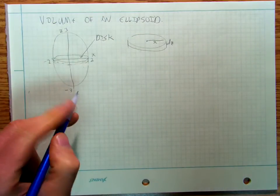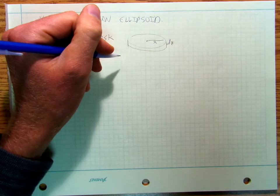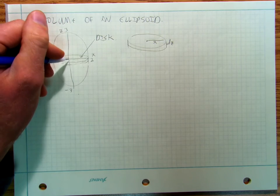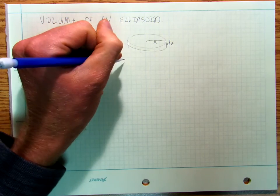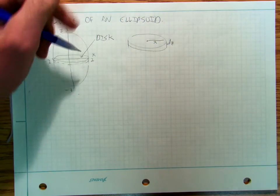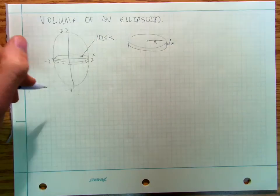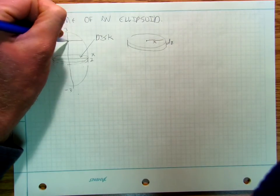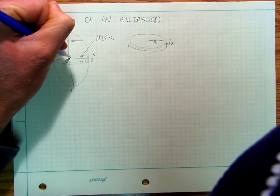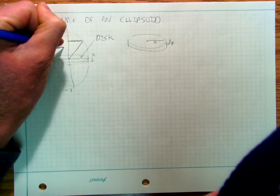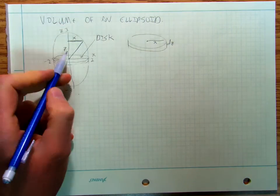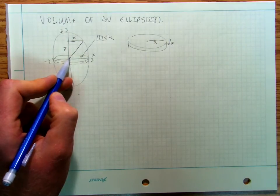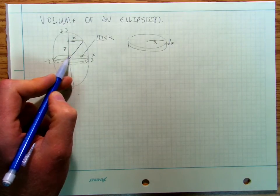And so then if I've got, so then what I'm going to have is I've got this sort of simplification here where this is z, this is x,